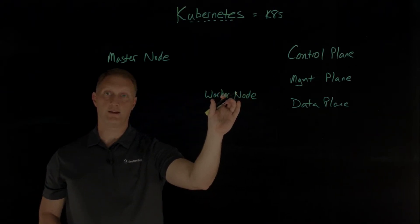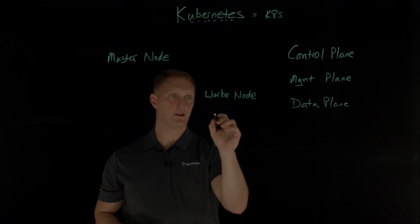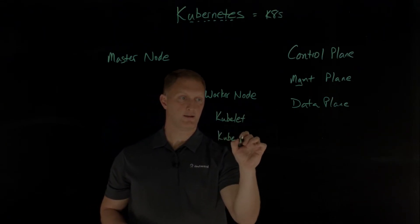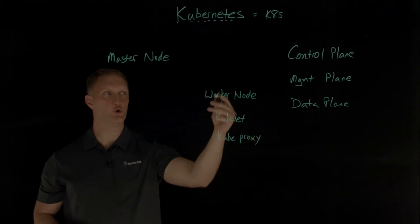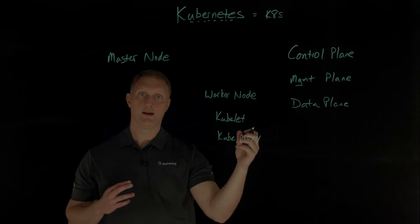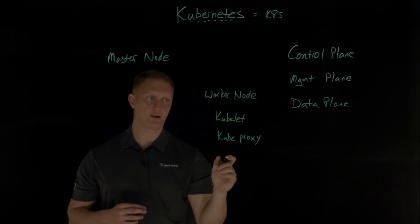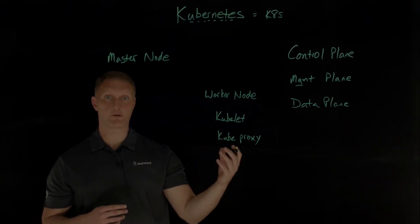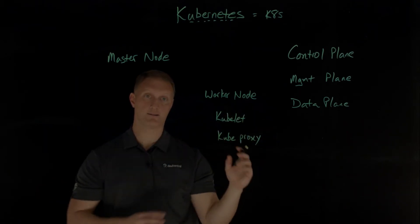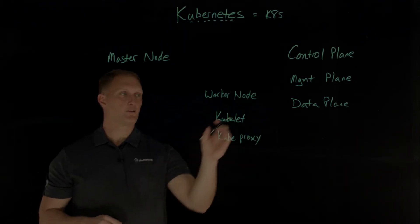Within each of the worker nodes, there are a couple of functions that Kubernetes provides. One of them is called a kubelet — a Kubernetes process that allows worker nodes to talk to each other and allows application processes to run. The other is a kubeproxy, which maintains network rules on these nodes. These network rules allow network communication to your pod from network sessions inside or outside of your cluster.